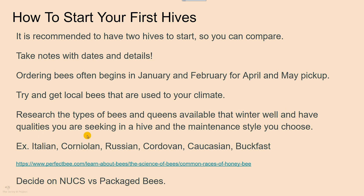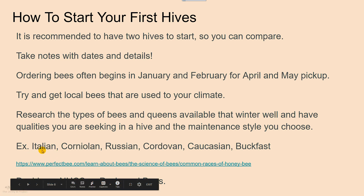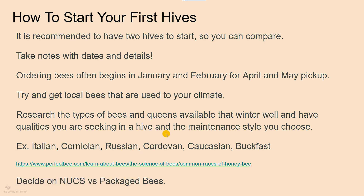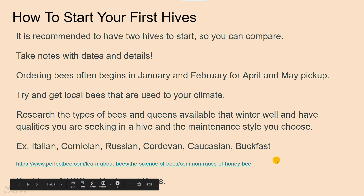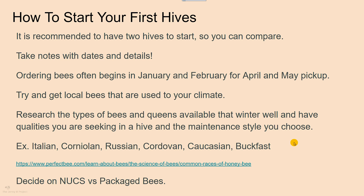Research types of bees and queens — Italian, Carniolan, Russian — and what you want to get out of your bees. Do you just want bees, pollination, propolis, or big honey producers? Decide your goals, research breeds, and go from there. Some companies don't even list breeds — they're just mass produced. We try to find certified bees with a known history, including varroa-hygienic queens that are naturally bred to help manage mite counts.